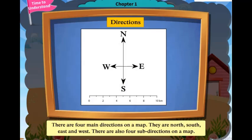There are four main directions on a map. They are north, south, east and west.